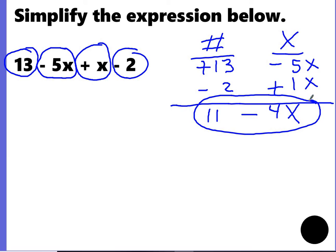You can also just put them together. 13 minus 2 is 11. Negative 5 plus x is negative 4x. Or you can write this as negative 4x plus 11. Either one of those will work.